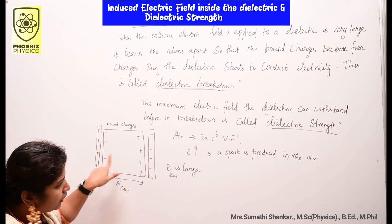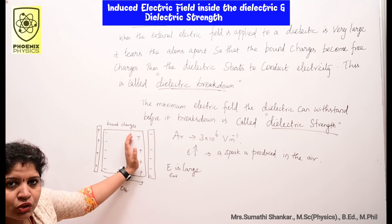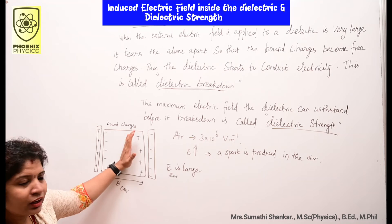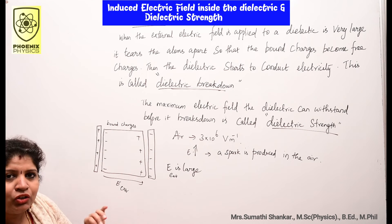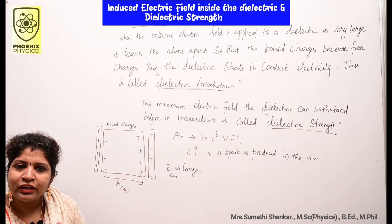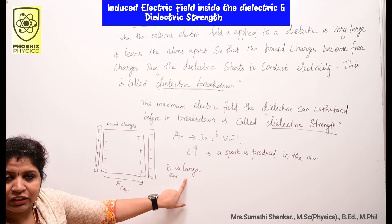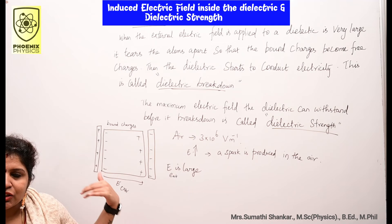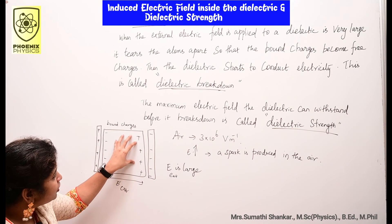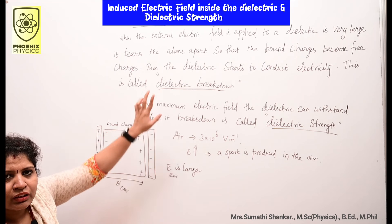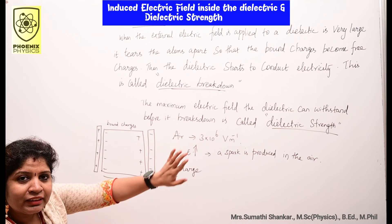Next is dielectric strength. When the external electric field applied to a dielectric is very large, it tears the bound atoms apart so that the bound charges become free charges. Then the dielectric starts to conduct electricity — even though a dielectric normally has no free electrons, increasing the external field causes the bound charges to become free charges. This is called dielectric breakdown.